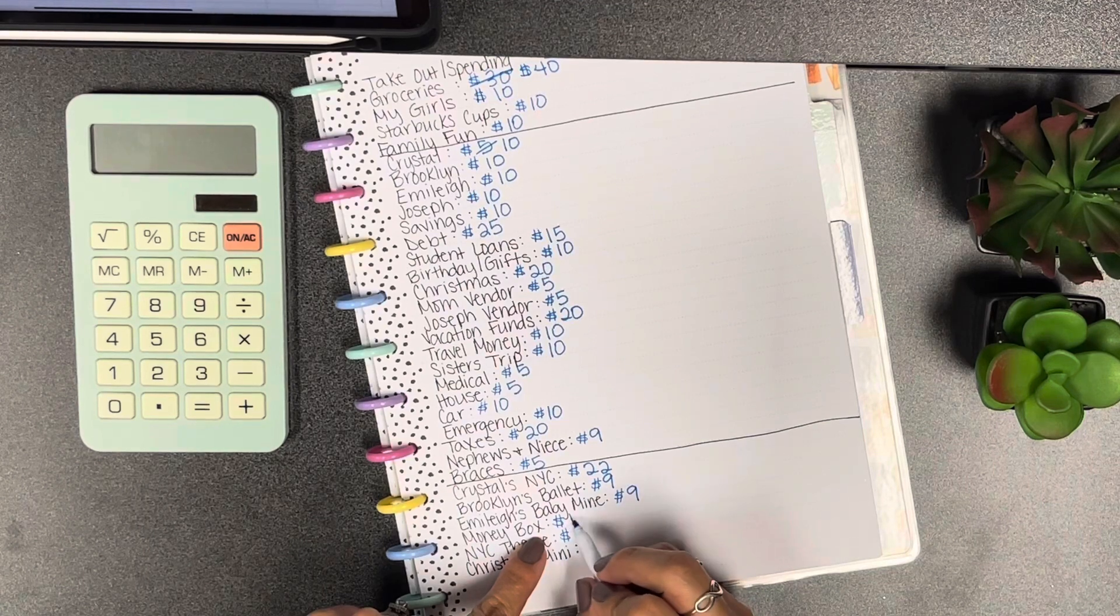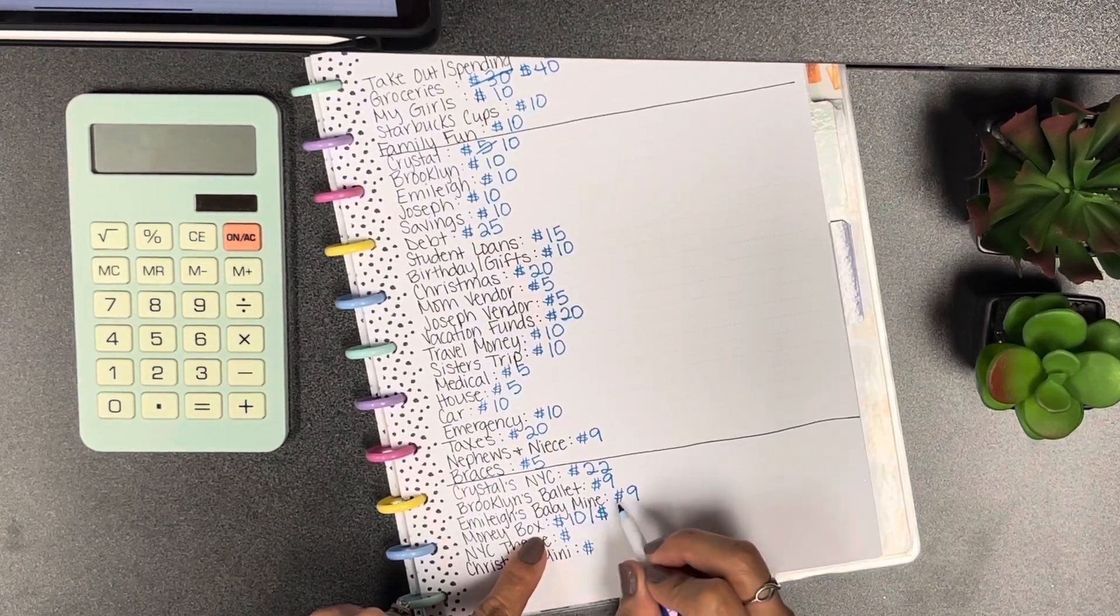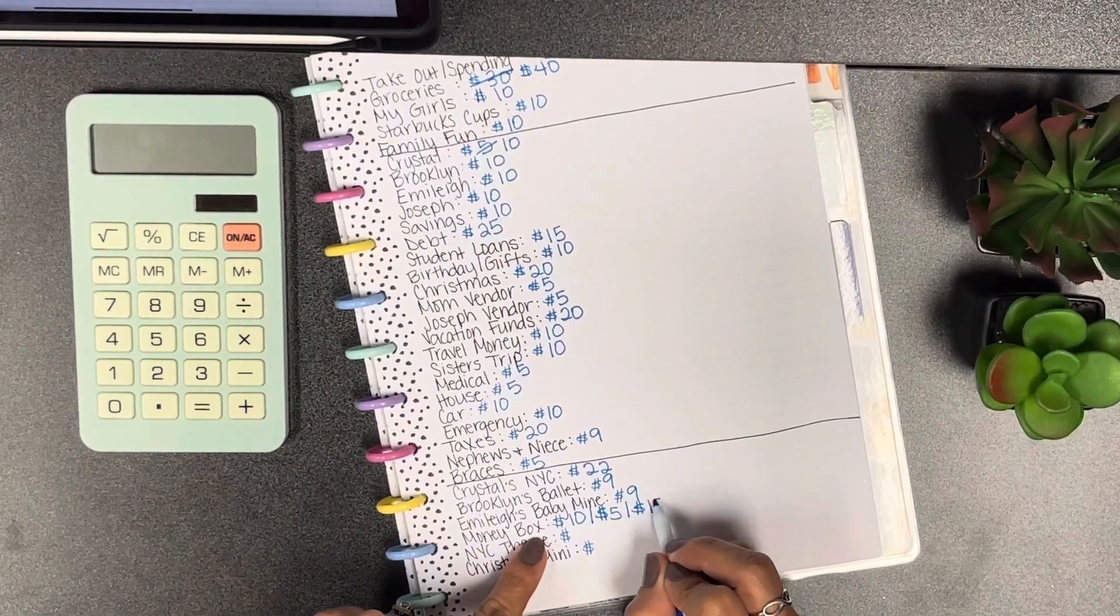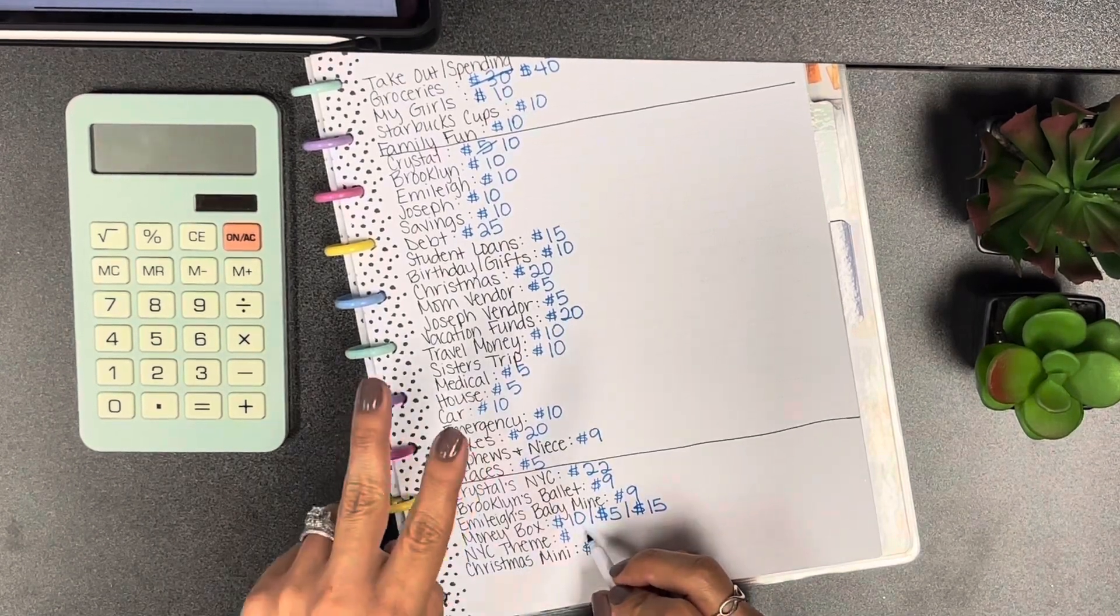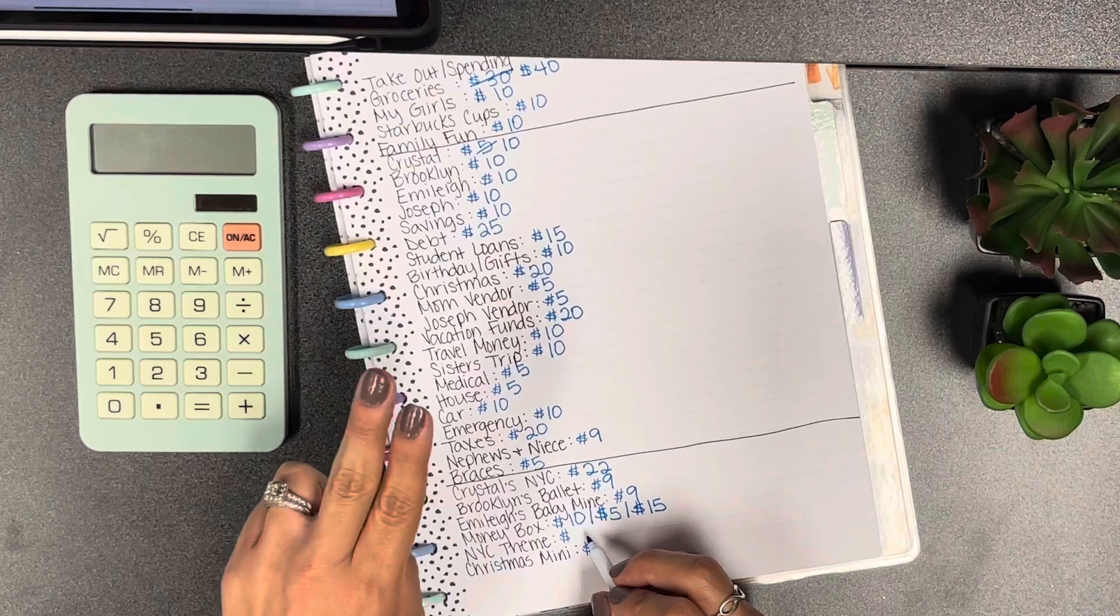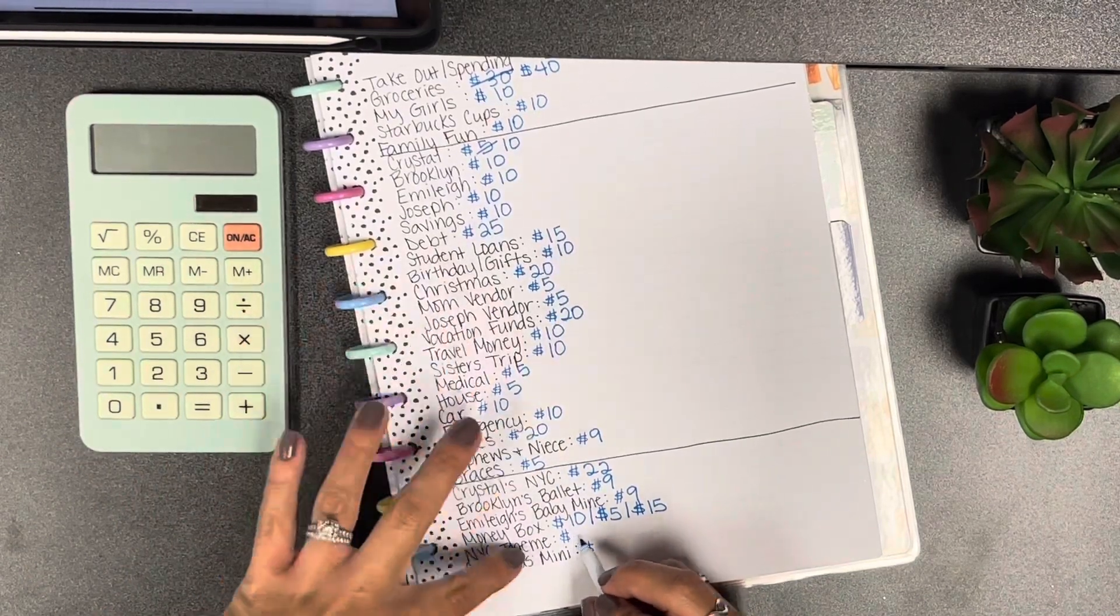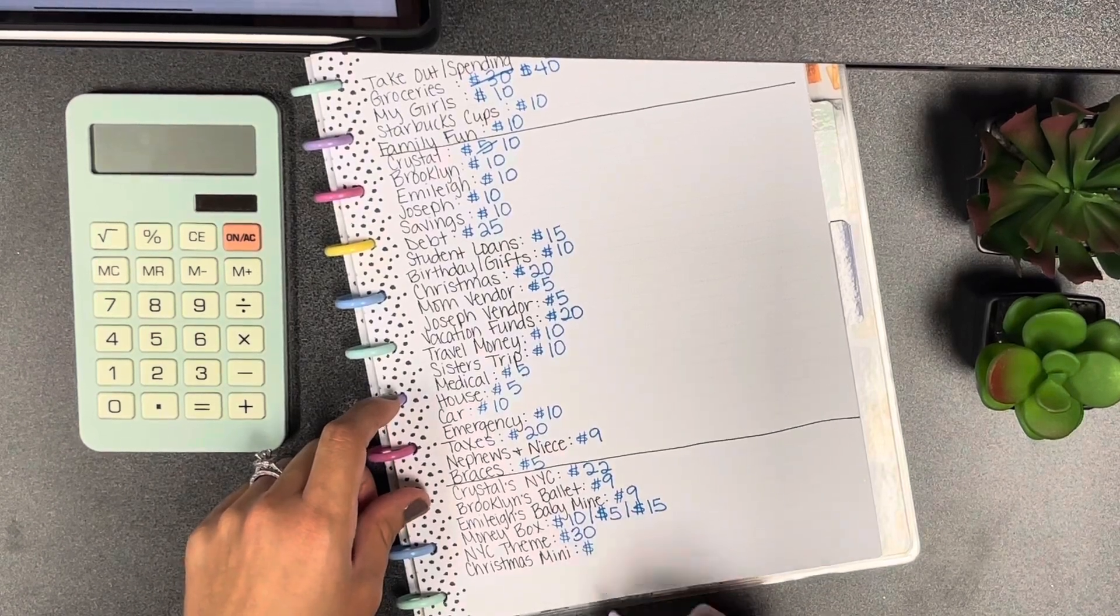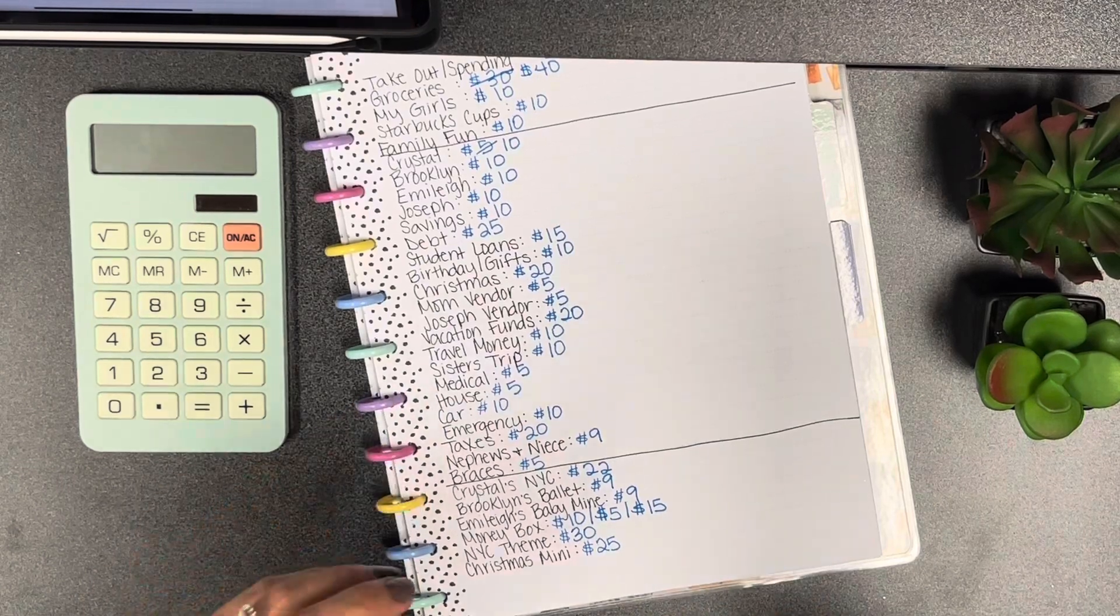Brooklyn and Emily we're gonna do nine and they're actually almost done with this savings challenge. My money box I picked three of them so there's ten, five, and fifteen. Then for my New York theme savings I actually had two pictures left but I decided to just put them both in. Each one was 15 so this week we're gonna do the last two, so that's 30.